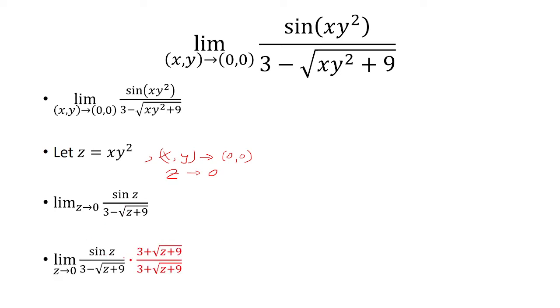We're going to solve this by multiplying the top and the bottom by the conjugate of the denominator. I'm going to leave the numerator factored. In the denominator, it's a difference of two squares, which is 9 minus the quantity z plus 9.